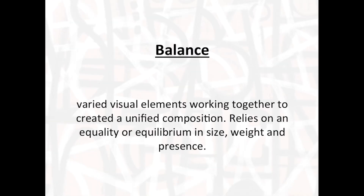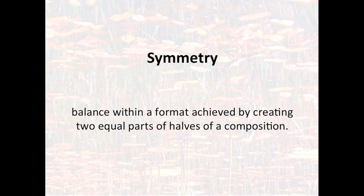Balance is visual elements working together to create a unified composition. Balance relies on an equality or equilibrium in size, weight, and presence of the objects depicted. One approach to balance is symmetry — a composition that is equal on two sides, whether left and right, top and bottom, or even along a diagonal line. Anything that balances with two equal parts qualifies as symmetry.